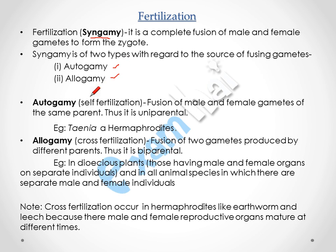Autogamy is called self-fertilization and allogamy is called cross-fertilization. Autogamy occurs mostly in hermaphrodites, which are uniparental, having male and female organs in the same individual. In this, the male and female gametes fuse in the same parent and thus the zygote is formed.